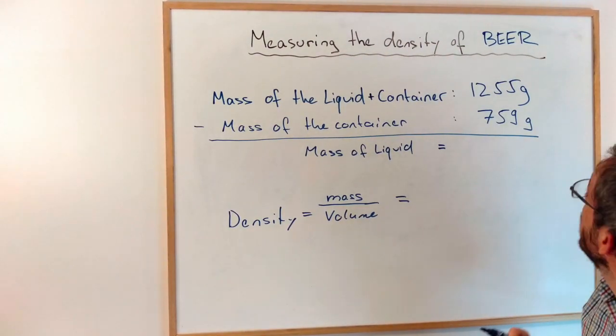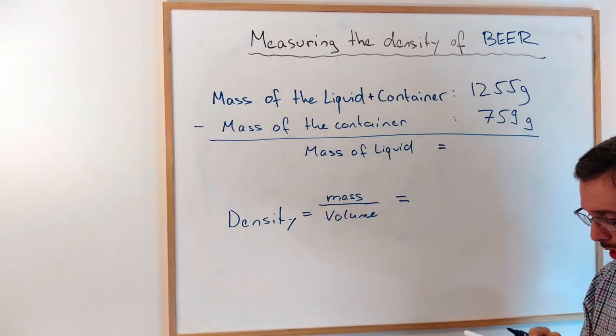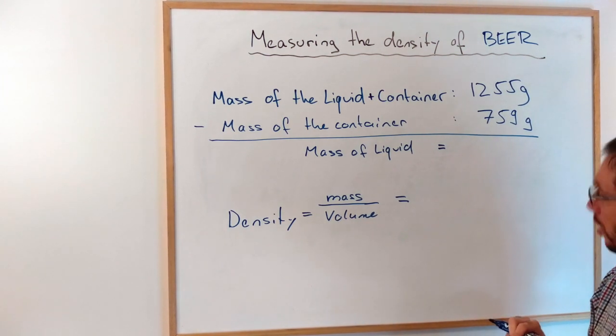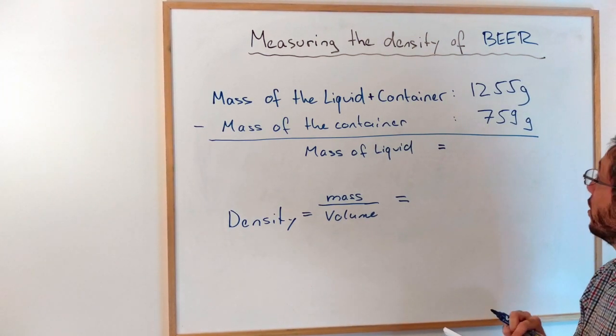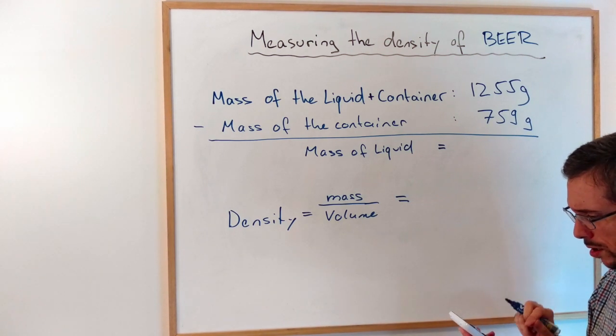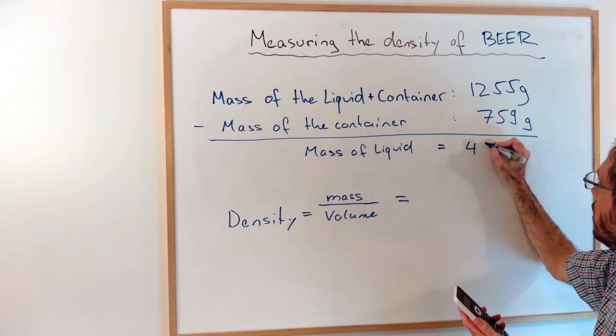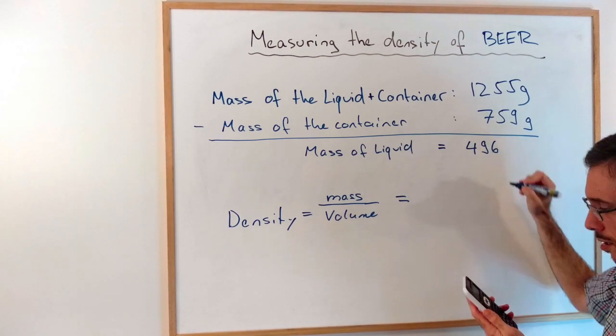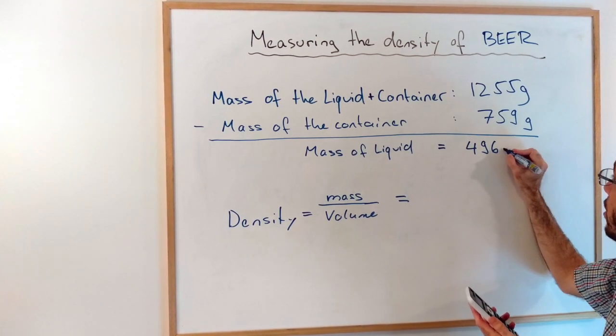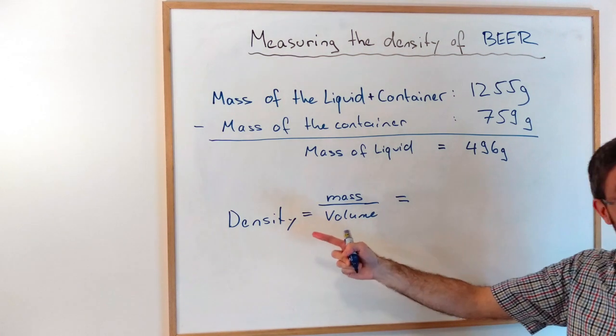So what I have to do now is subtract 759 from 1255. So 1255 minus 759 gives me 496 grams, and now I can do my calculation.